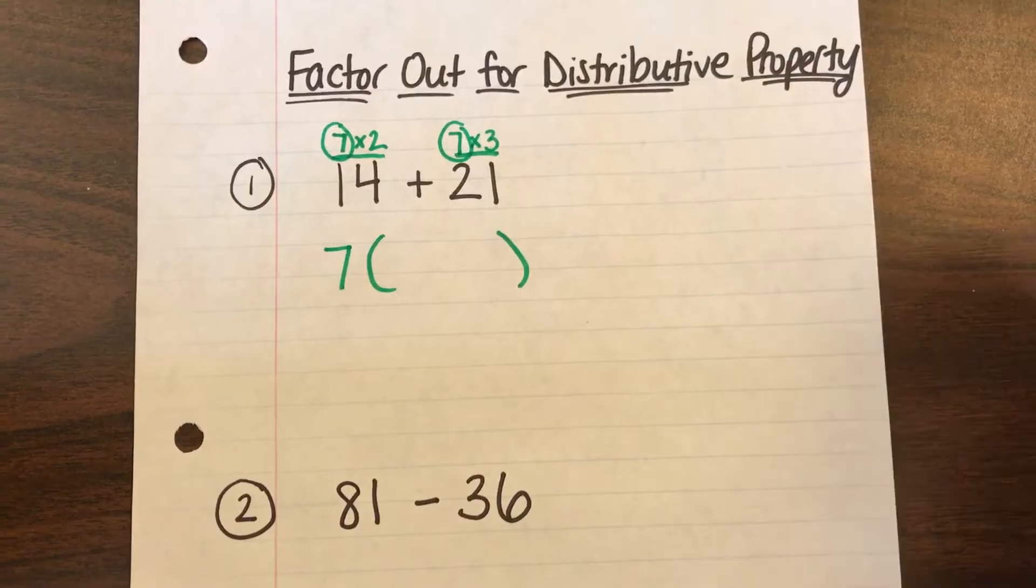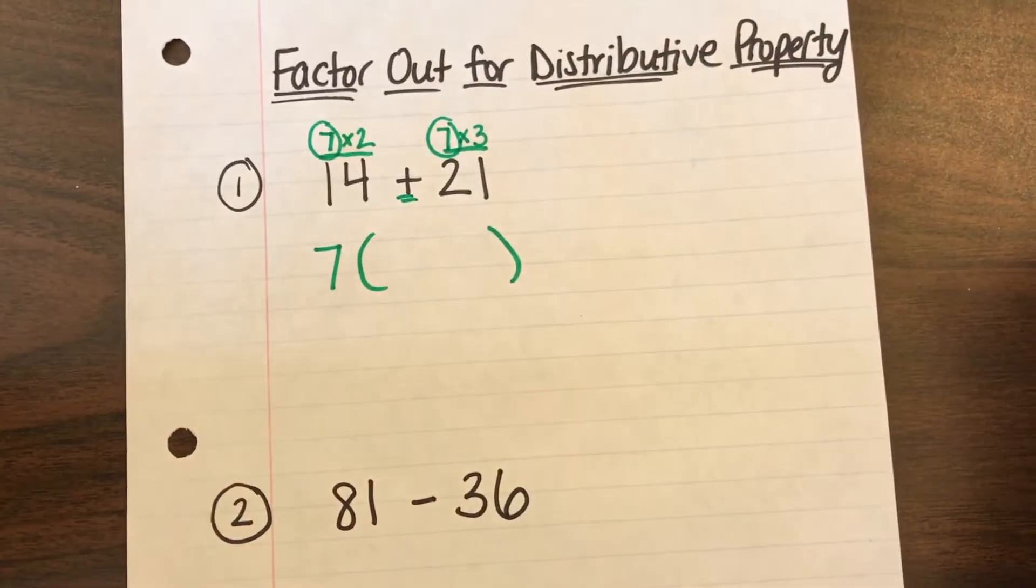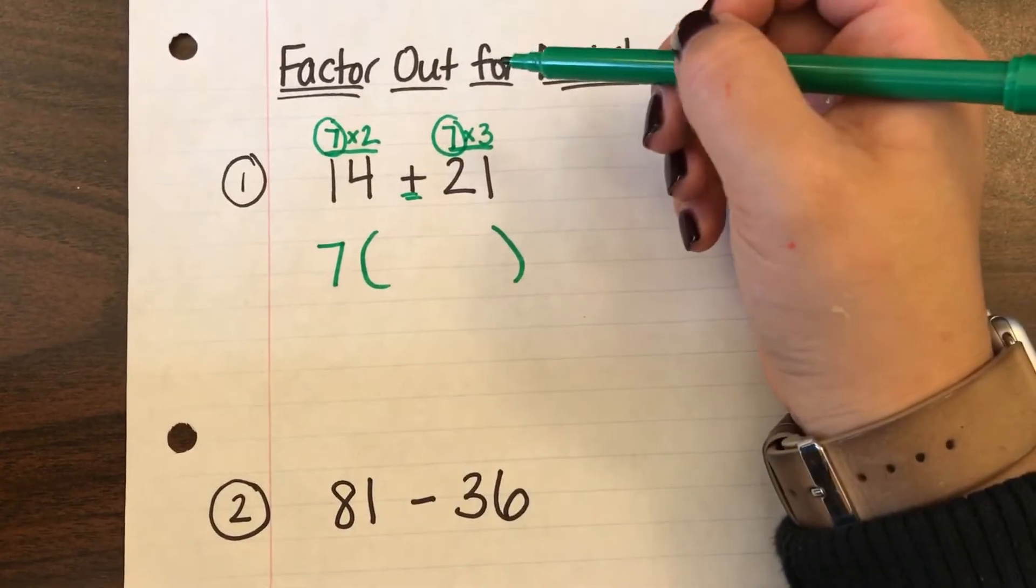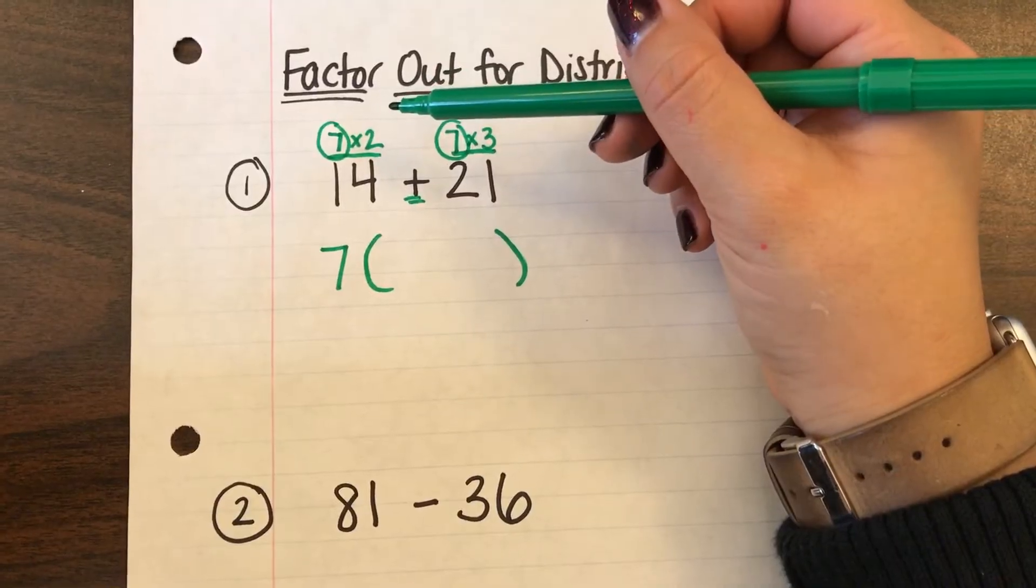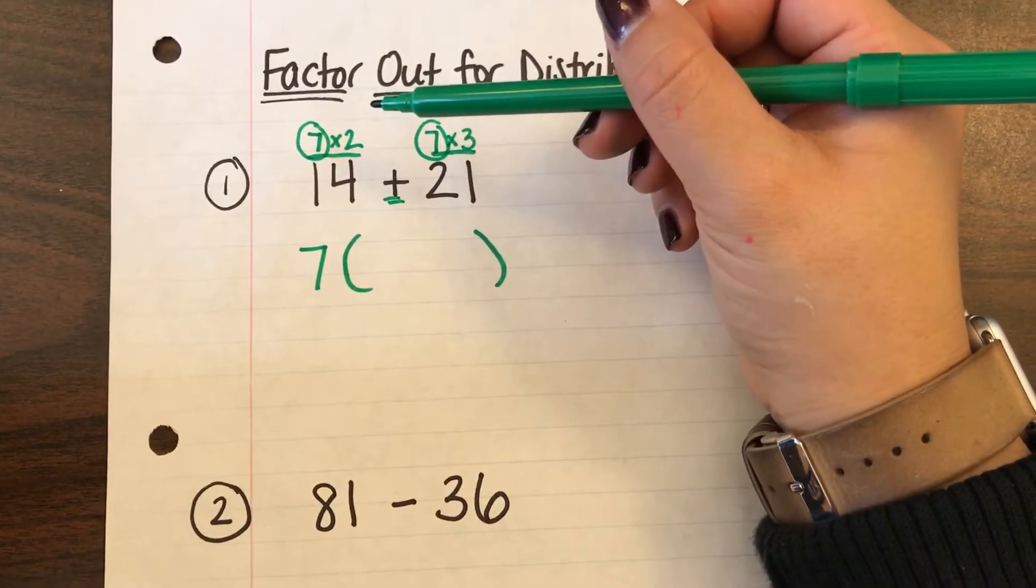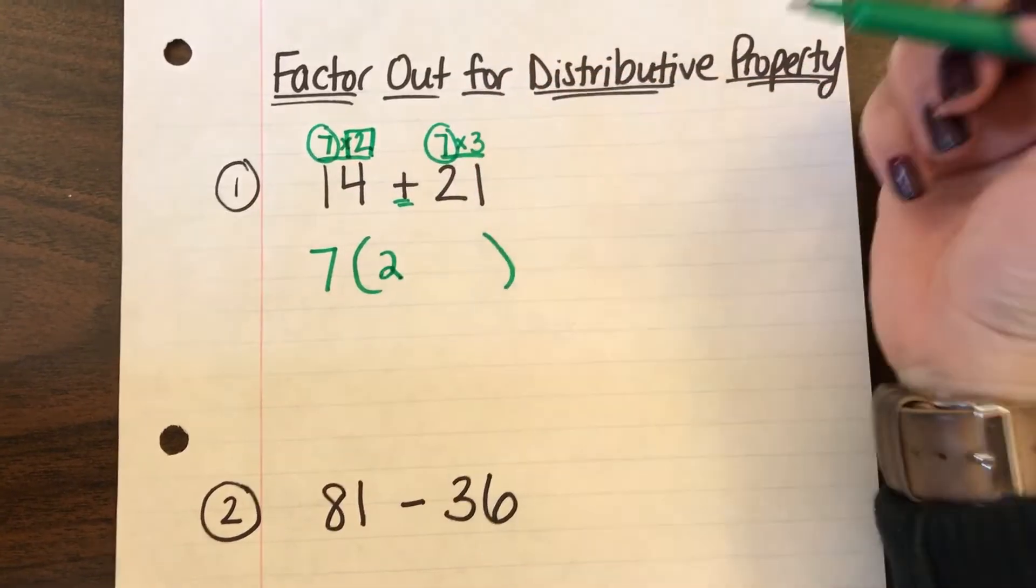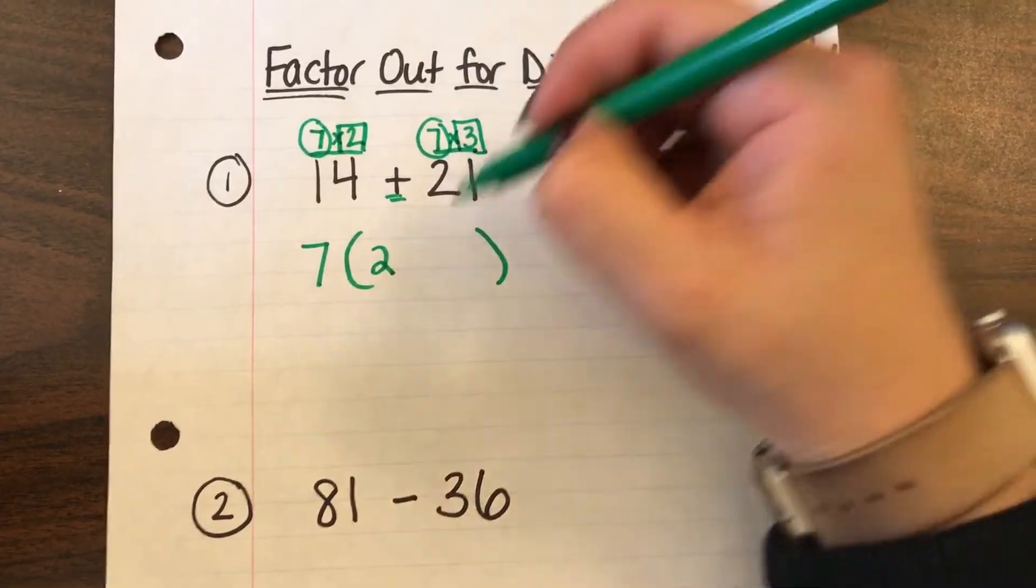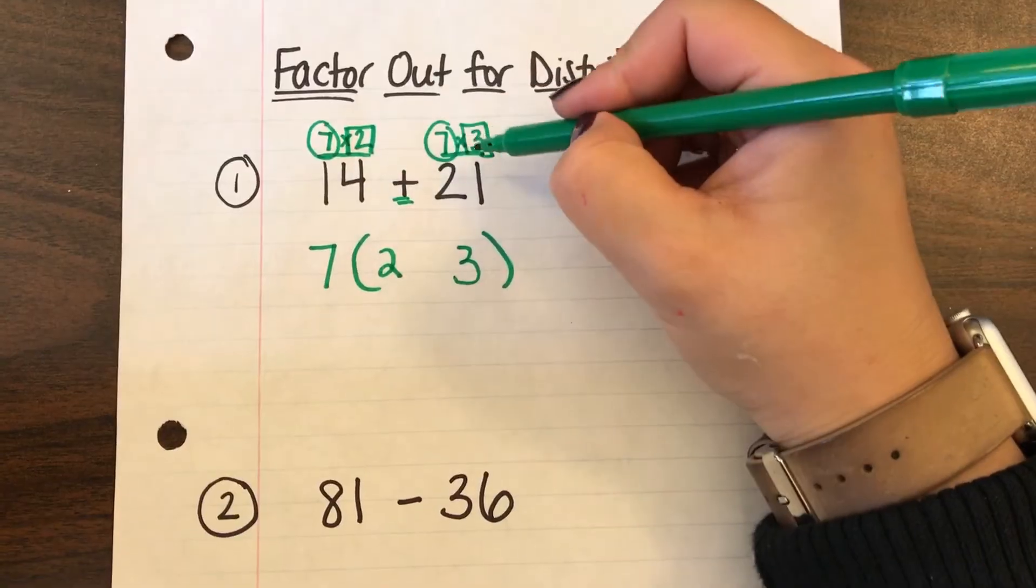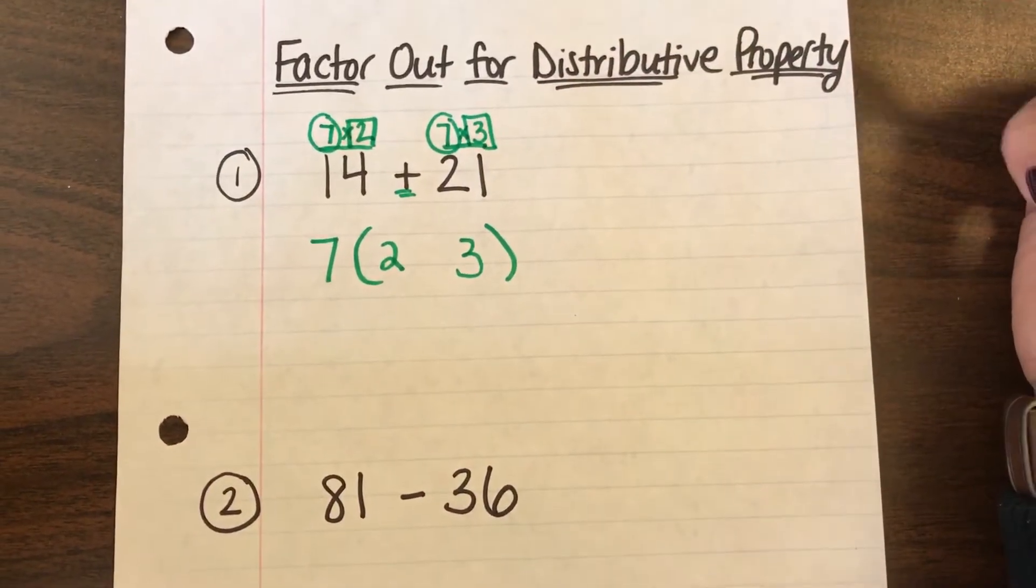I know it's a hi because it's a plus sign. So the numbers that were left inside the house that the 7 wanted to get in to say hello to are 2 and 3. And I just used the other numbers that were part of my multiplication facts from above.